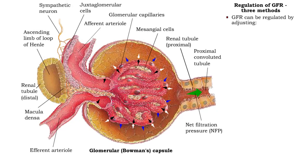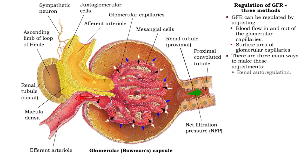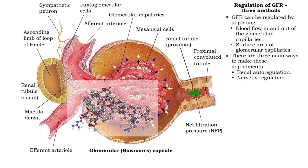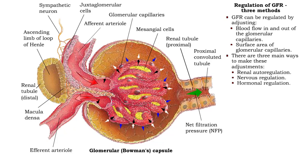Glomerular filtration rate can be regulated by adjusting both the blood flow in and out of the glomerular capillaries and the surface area of the glomerular capillaries. There are three main ways to make these adjustments: renal autoregulation, nervous regulation, and hormonal regulation.